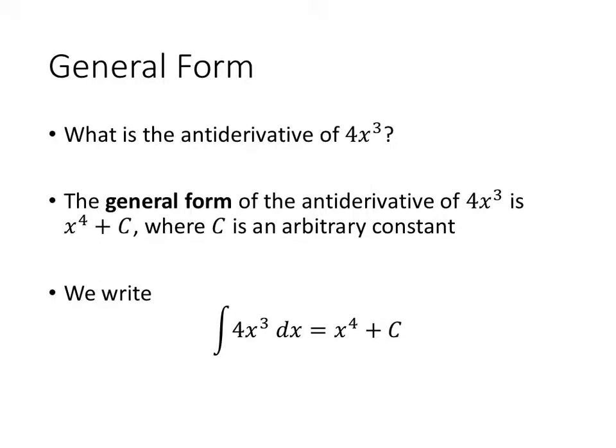So we say that the general form of the antiderivative of 4x cubed is x to the fourth plus c, where c is an arbitrary constant. So c might be zero — in other words, there might not really be a c there at all — or it might be some positive number, or it could even be some negative number. So we write this as: the indefinite integral of 4x cubed with respect to x is x to the fourth plus c.